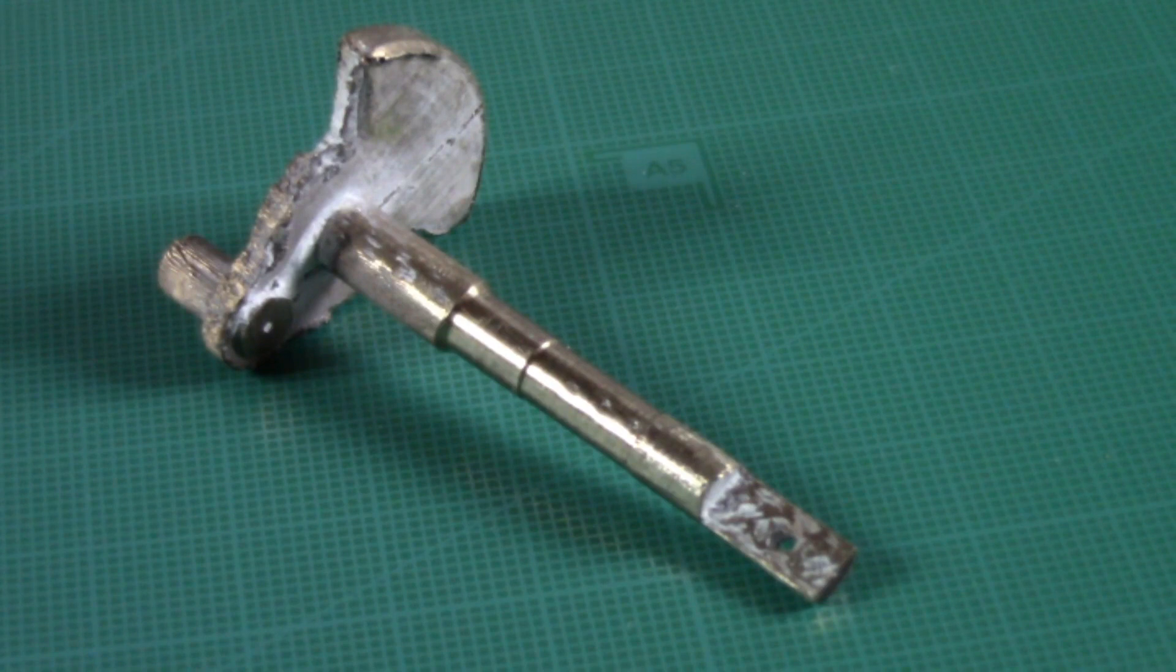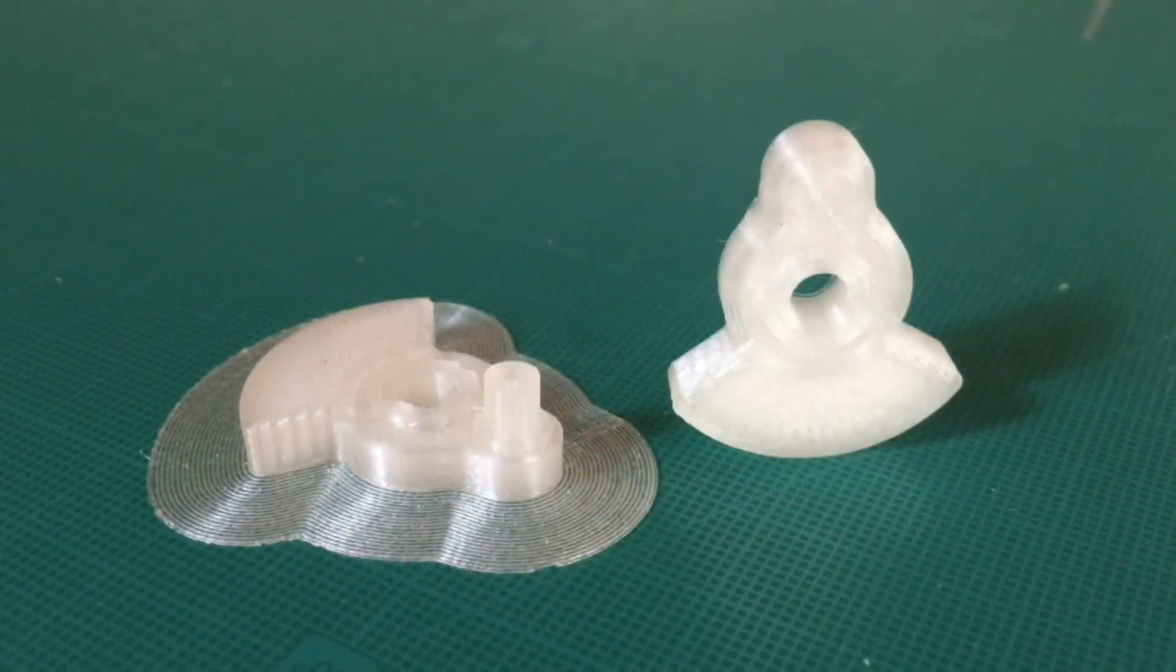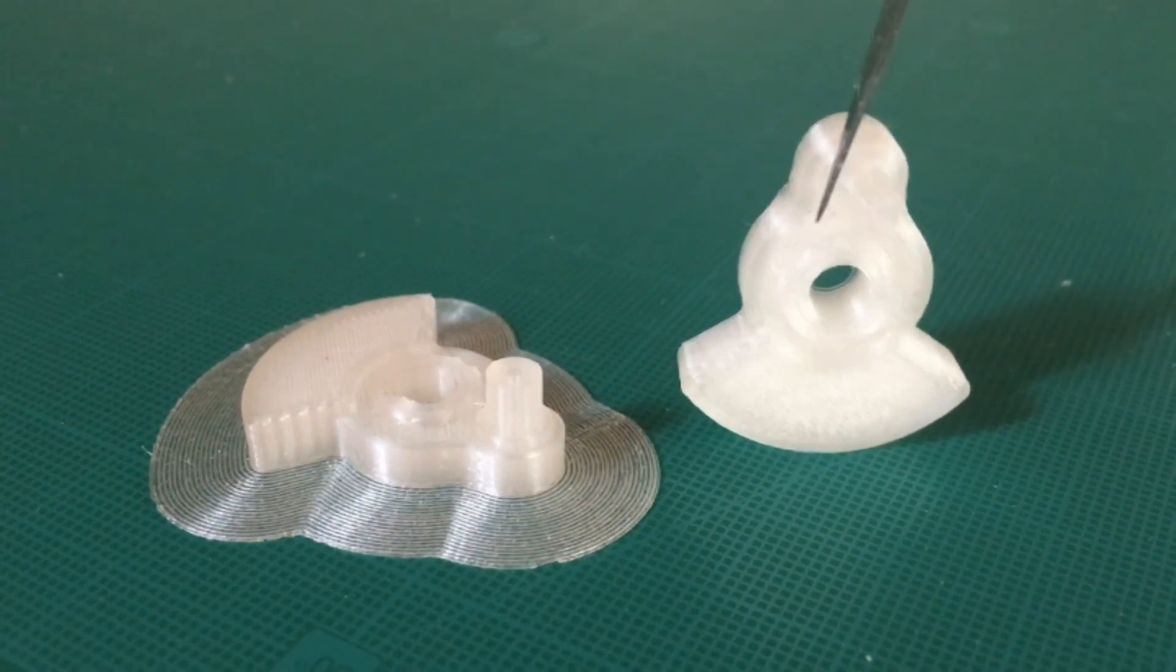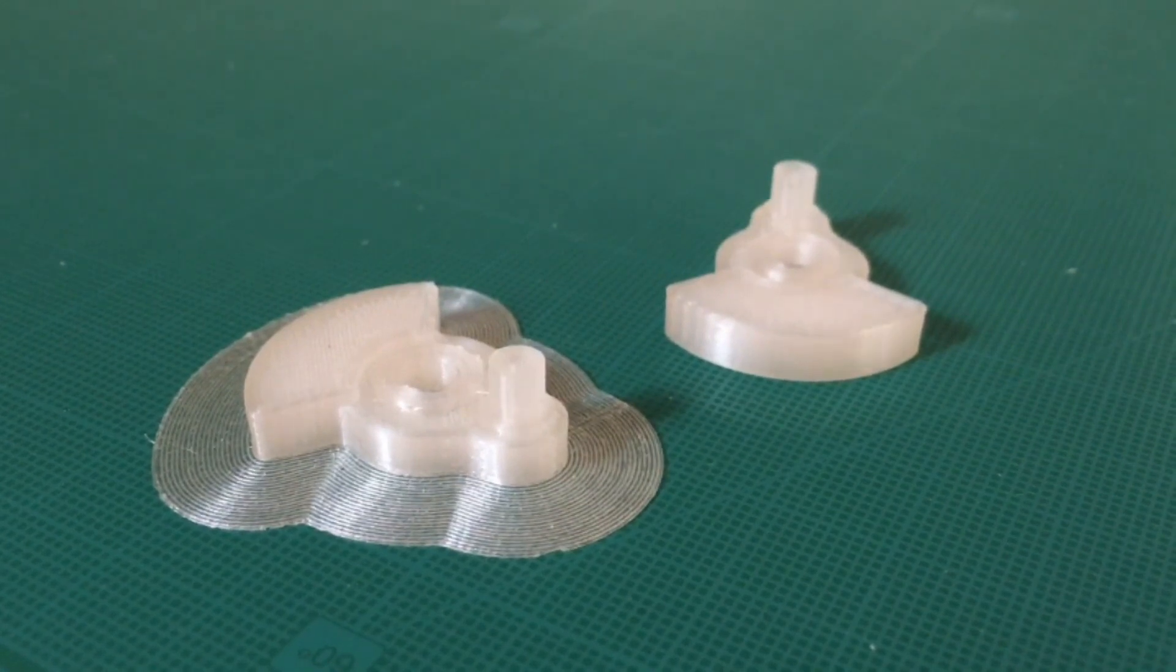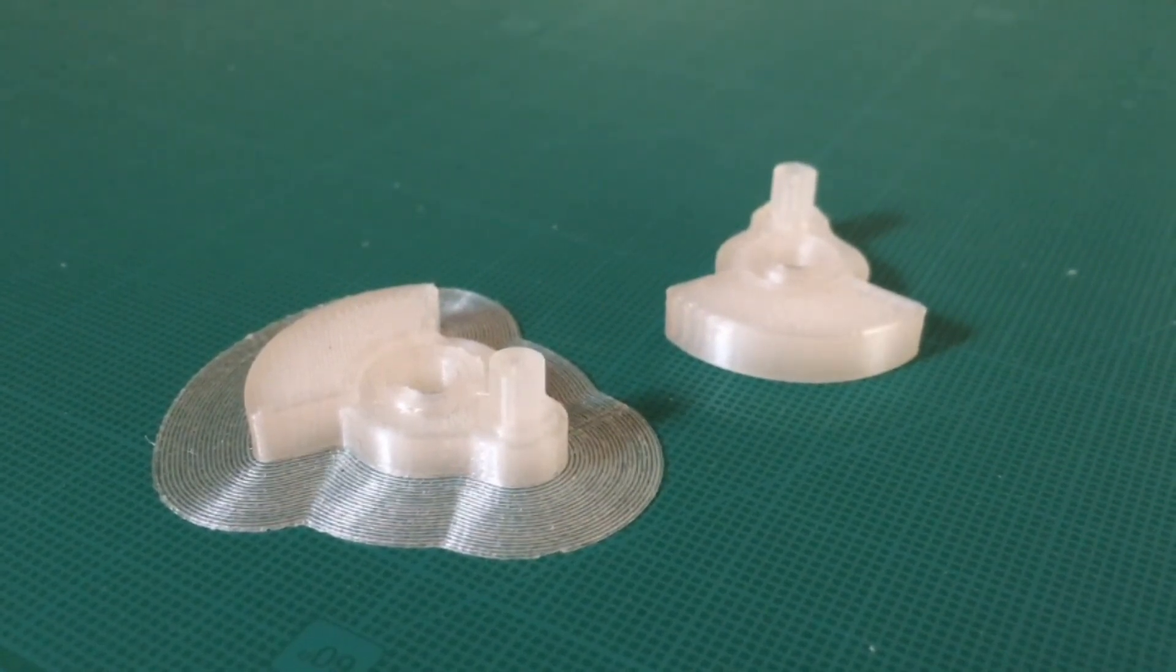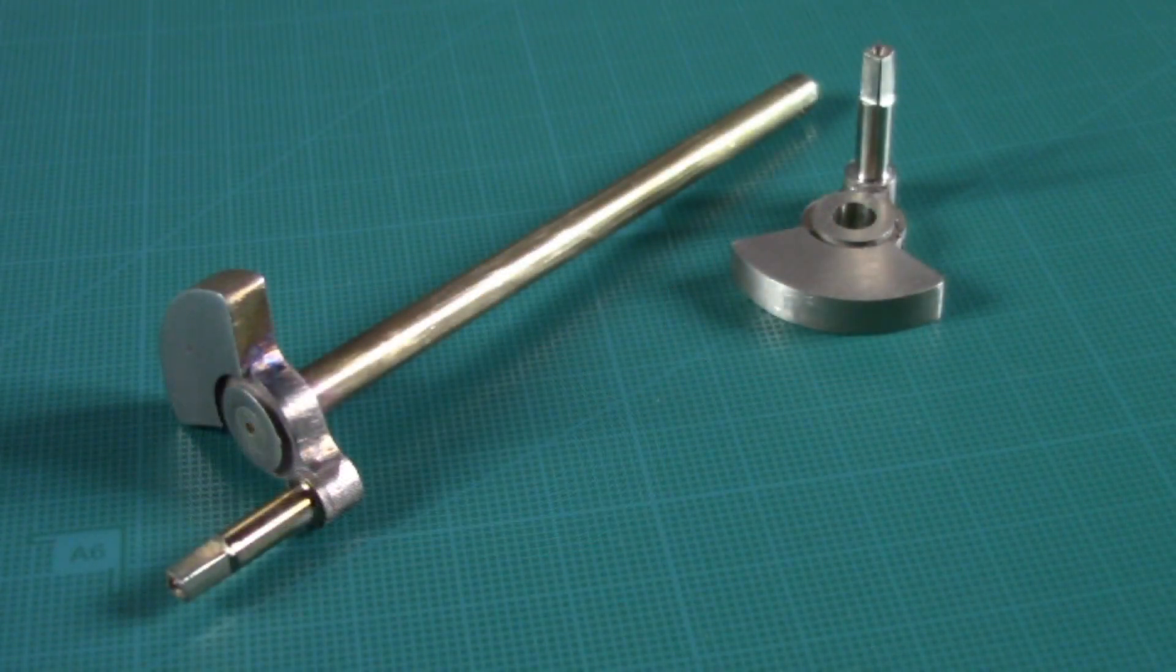As Einstein said, a bit of further thought led to the final solution. The parts were separated and the counterweights placed flat on the printer table. The contours are perfect, the layer structure is no longer visible, and the post-work is limited.